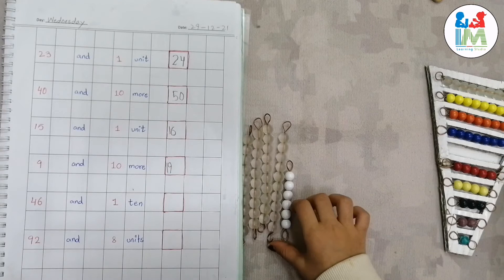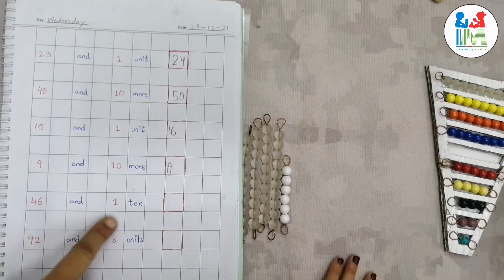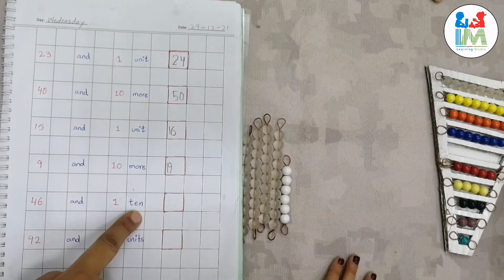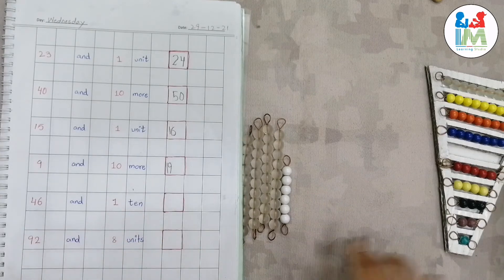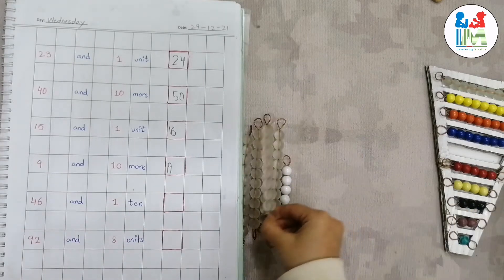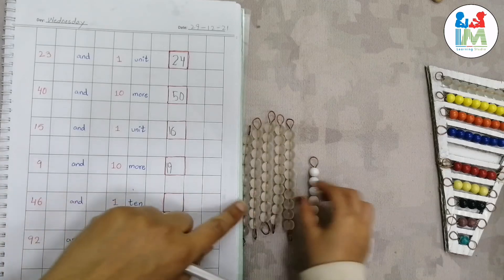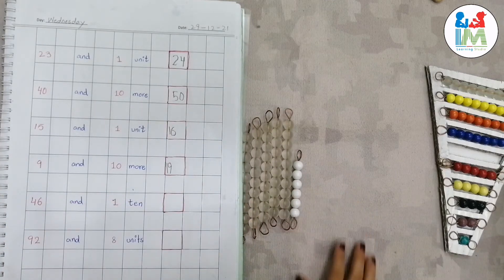Okay, good. Now what we have to add in 46? One ten. Take one ten from there. Yes. Now what number is this? 56.